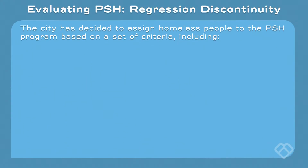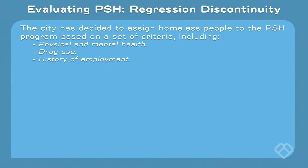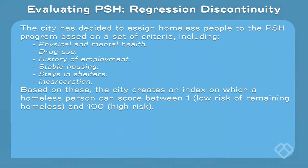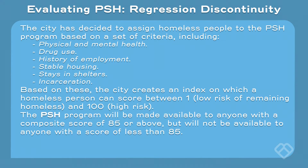It's called regression discontinuity. The city has decided to assign homeless people to the permanent supportive housing program based on a set of criteria, including their physical and mental health, drug use, history of employment, stable housing, stays in shelter, and incarceration. Based on these factors, the city creates an index on which a homeless person can score between 1 — a low risk of homelessness — and 100, a high risk of homelessness.